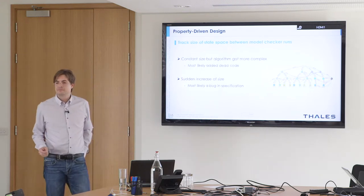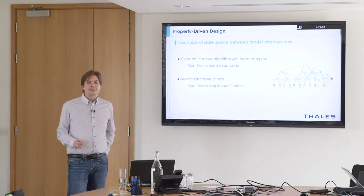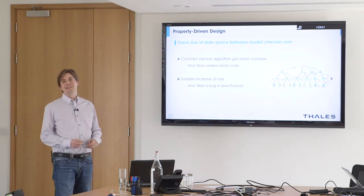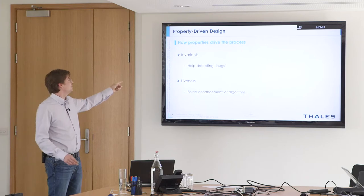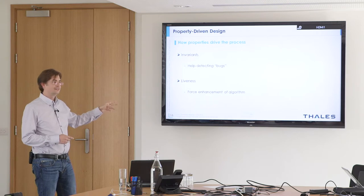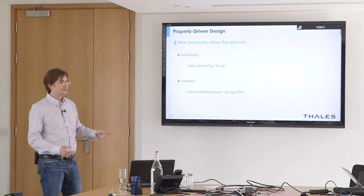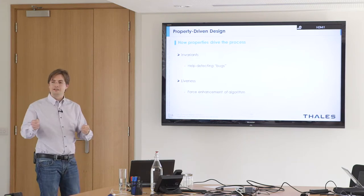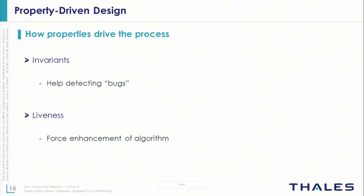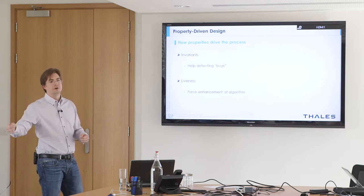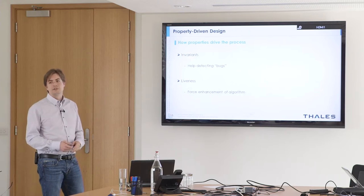Invariants help detect bugs, but only liveness properties really drive the design process. If you have a safety invariant saying no two masters are allowed but no property saying eventually some node is a master, you won't get there. Liveness really helps with availability and gives you examples where you see something like a livelock or similar situation.